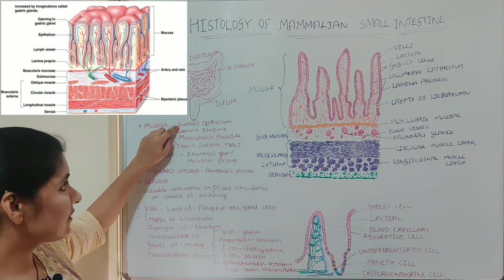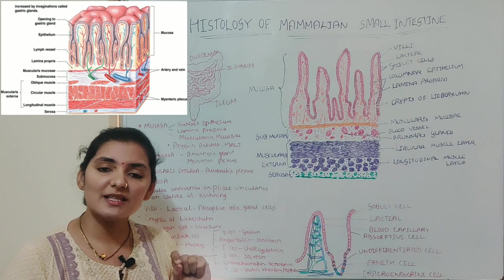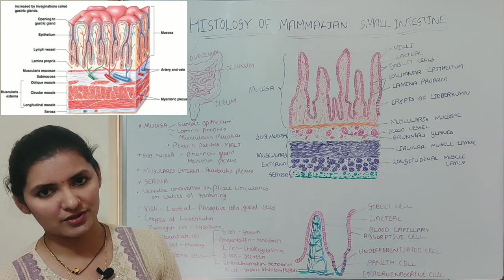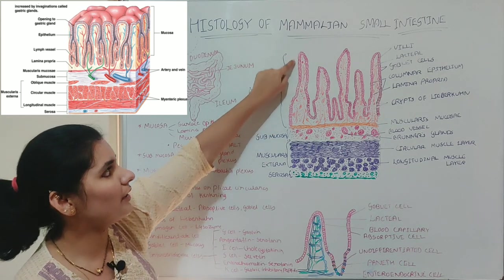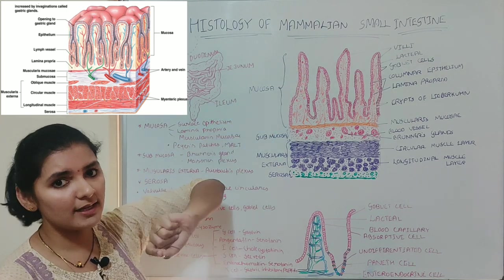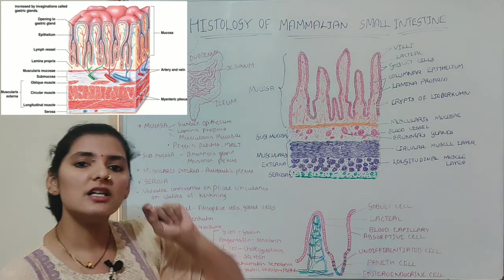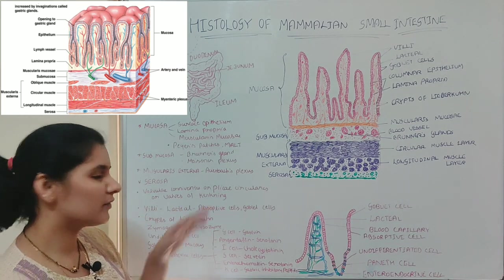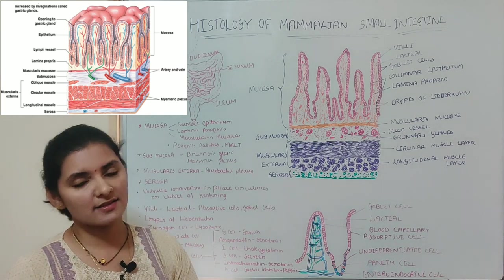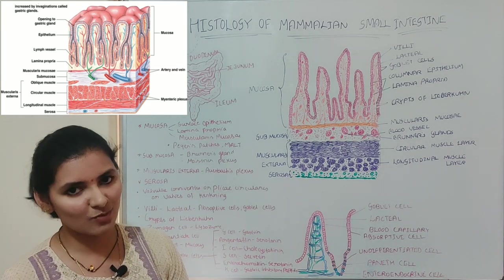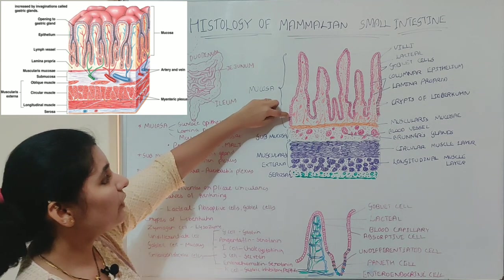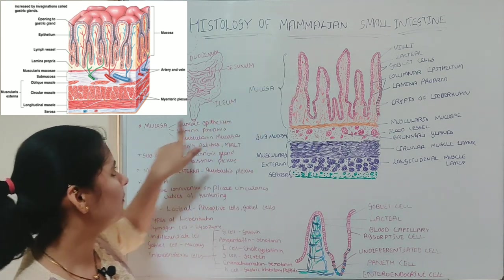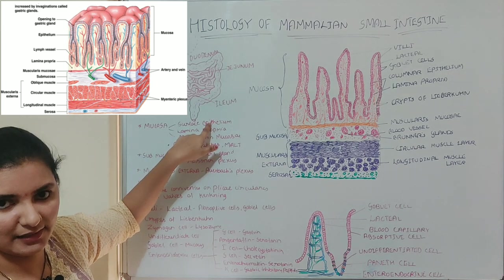The first component is surface epithelium. Surface epithelium is the innermost layer of the mucosa and it covers the villi. As already mentioned, villi are the small finger-like projections present on the valves of Kerckring and over the entire inner surface of the small intestine. These villi are covered by a layer of epithelium known as surface epithelium.